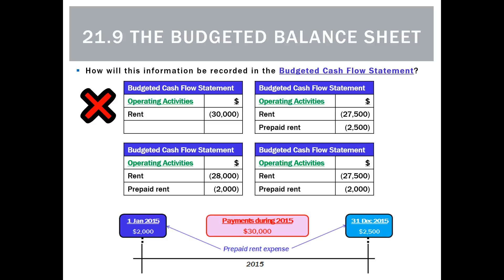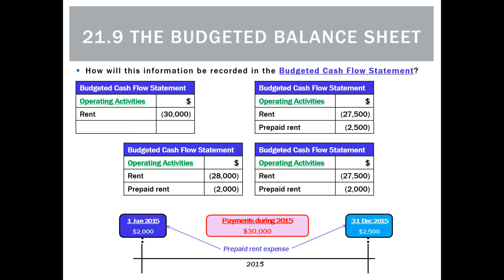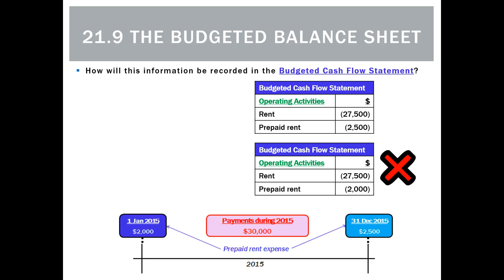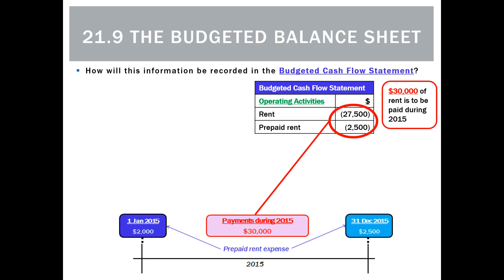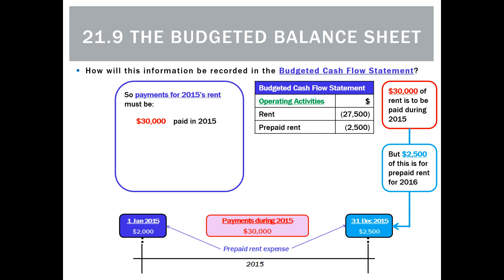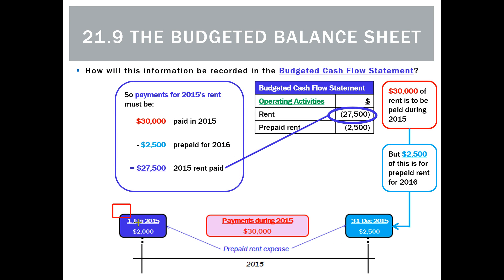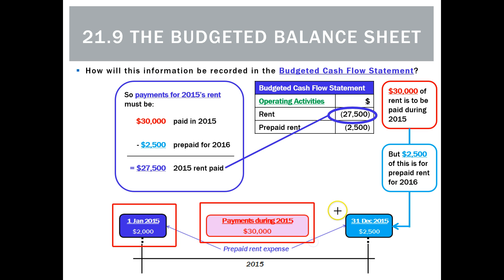We rule out the $30,000 option — that's what was paid, but not all just for this period's rent. We eliminate the option showing prepaid rent of $2,000 because that was from last period and won't appear in this period. We also eliminate the option with rent of $27,500 plus prepaid rent of $2,000 for the same reason. The correct answer is rent payments of $30,000, which includes $2,500 prepaid for next period — but that $2,000 prepaid from last period was already paid then and doesn't appear as a payment now.